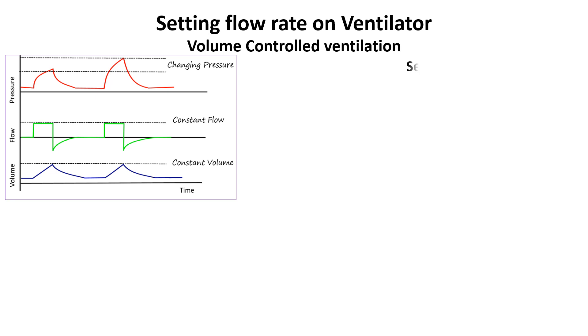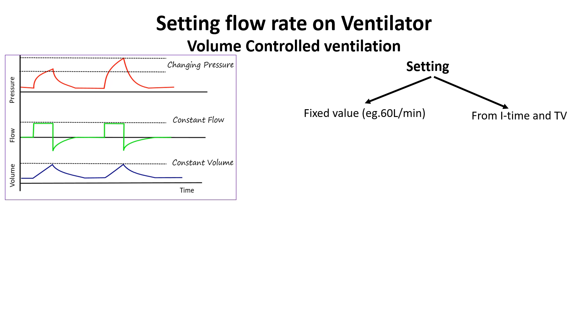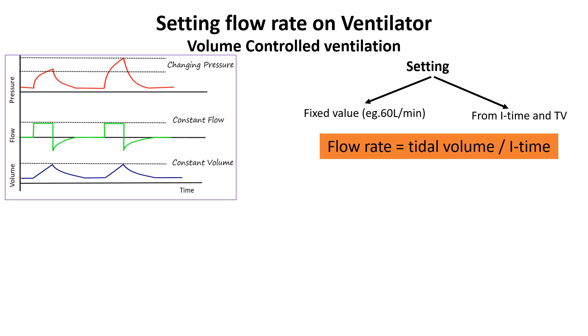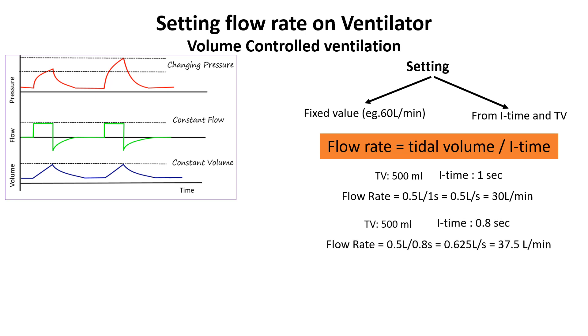The flow rate depends on the ventilation mode, patient condition, and clinical goals. In volume-controlled ventilation, flow rate can be set manually as a fixed value, or adjusted indirectly by setting tidal volume and inspiratory time, which the ventilator uses to calculate the required flow. For example, if the tidal volume is 500 mL and the inspiratory time is 1 second, the required flow rate is 30 liters per minute. If the inspiratory time is shortened to 0.8 seconds, the flow rate must be increased to 37.5 liters per minute to maintain the set tidal volume.